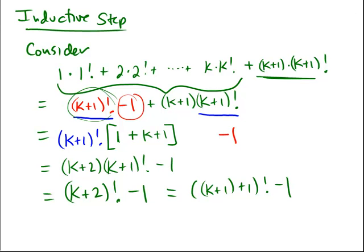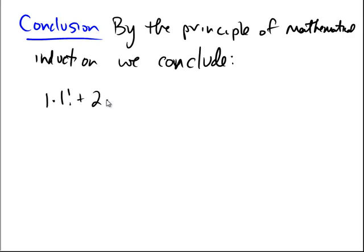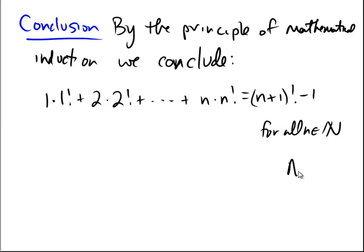Our conclusion is by math induction, by the principle of mathematical induction. We conclude exactly what we wanted to show. We conclude that 1 times 1 factorial plus 2 times 2 factorial plus etc. up to n times n factorial is precisely equal to n plus 1 factorial minus 1 for all natural numbers.